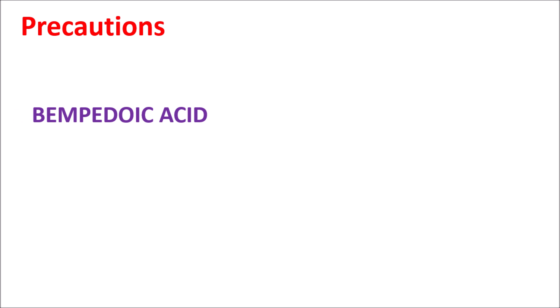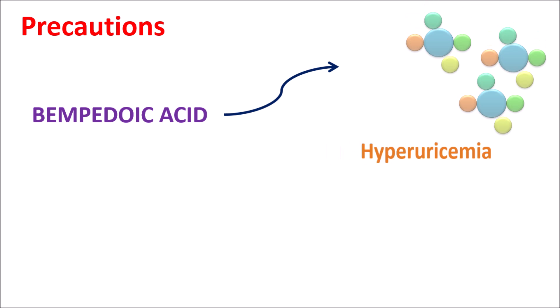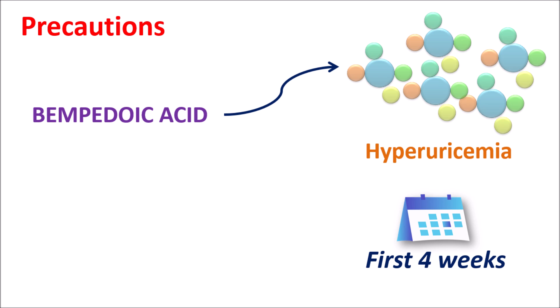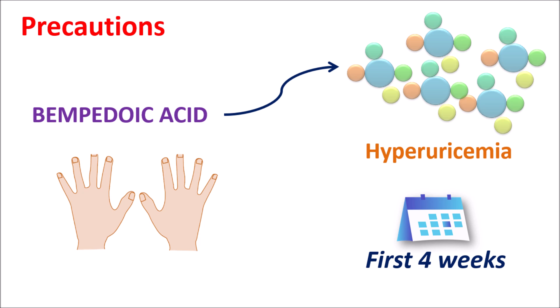One important precaution is that Bempedoic acid can increase the levels of uric acid, resulting in hyperuricemia. This elevation in uric acid is commonly observed within the first four weeks of treatment and can extend up to 12 weeks. So within the first four weeks, any increase in uric acid levels should be carefully monitored. In people who have more risk for elevation of uric acid, or with any previous history of hyperuricemia or risk of gout, Bempedoic acid should be carefully used. When uric acid levels are excessively increased it can affect the joints, causing deposition of uric acid at the joints leading to inflammation and increased risk of gout.